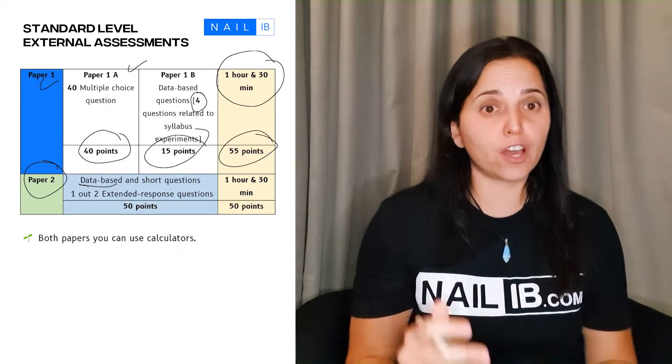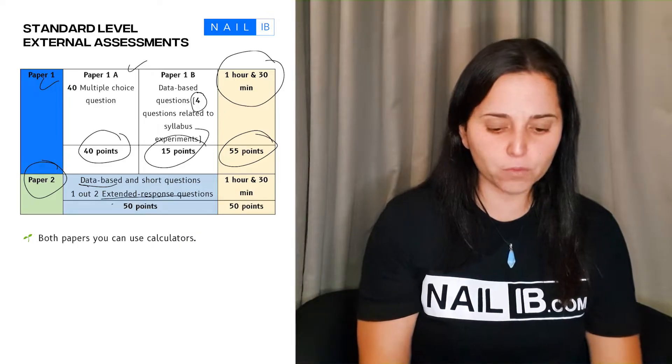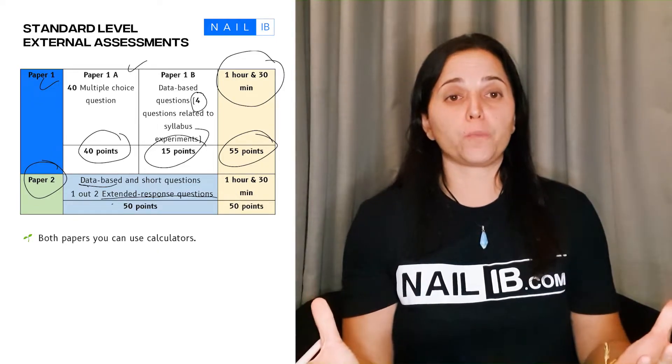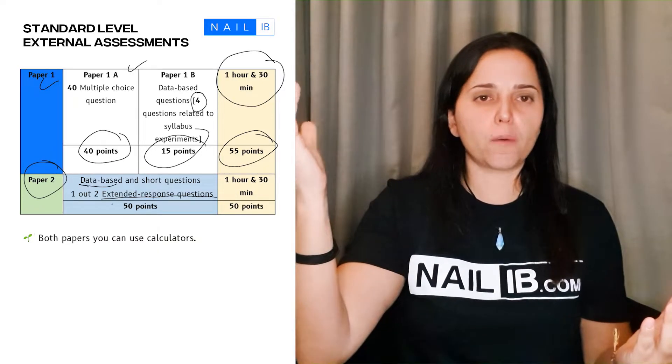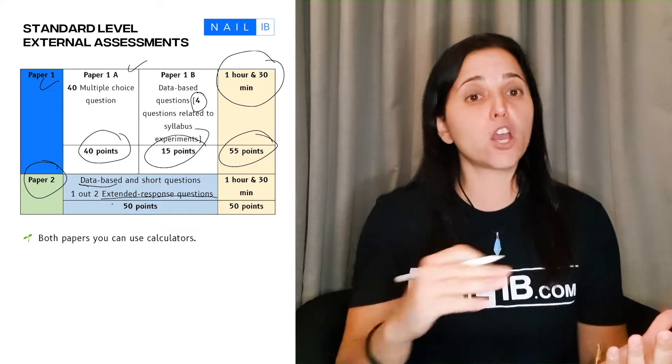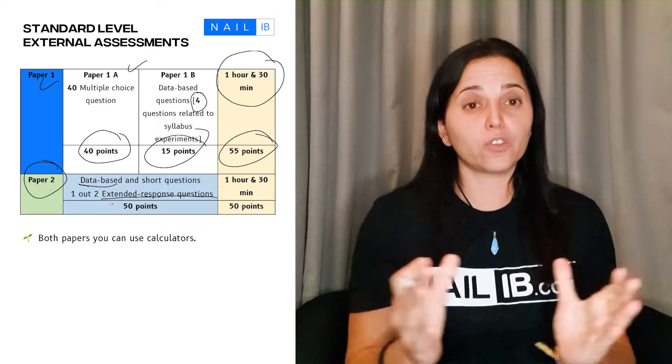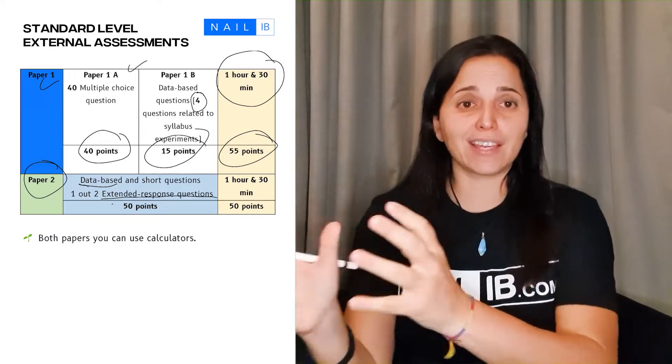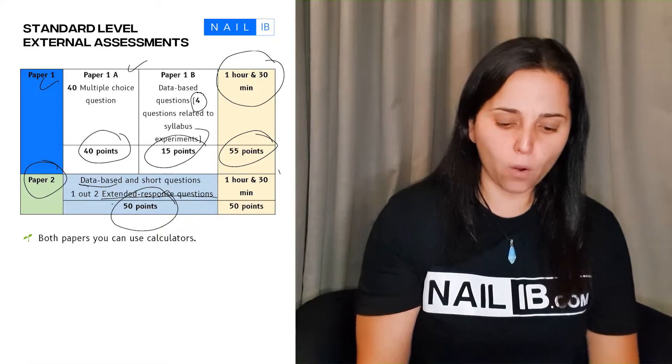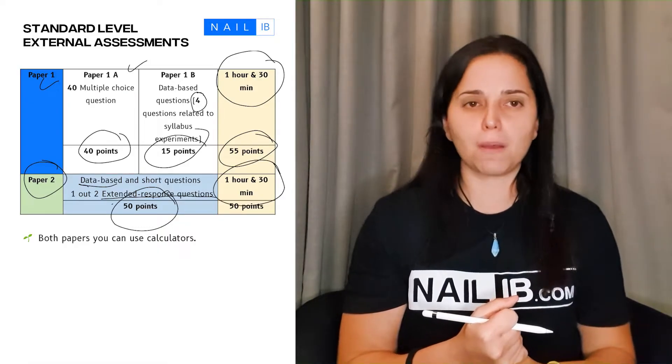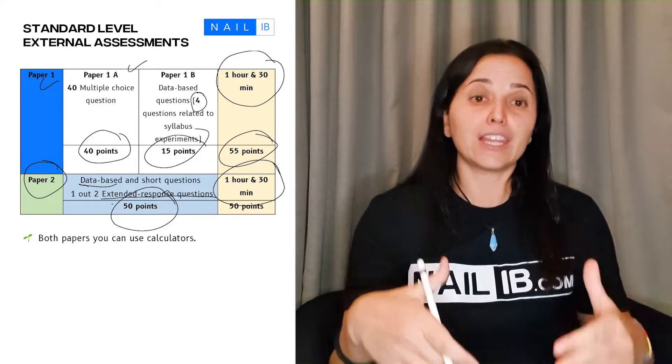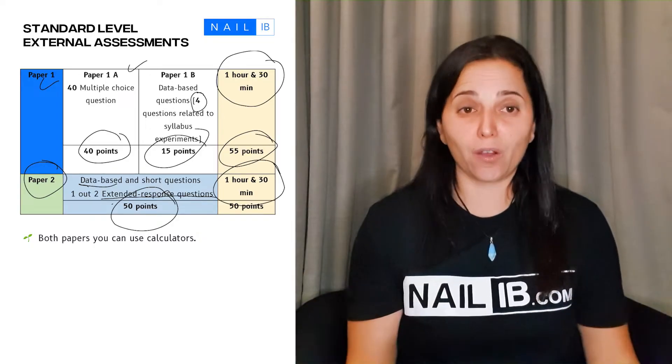Then it comes to the other section of paper two, which is basically extended response questions. This is usually a little bit more in-depth. There will be two options for you. If you choose this option, there are A, B, C questions, and you have to answer from A to C fully to get those points. Together, the data analysis, short answer questions, and extended response give you 50 points, and you have about one hour and 30 minutes to conduct. The good news is that for both papers, you can use calculators.